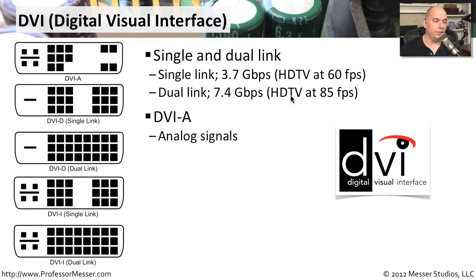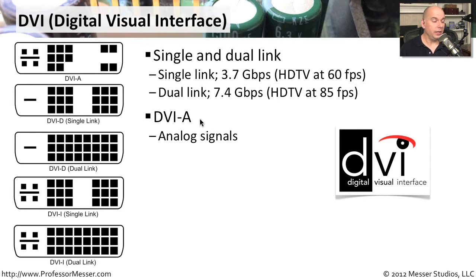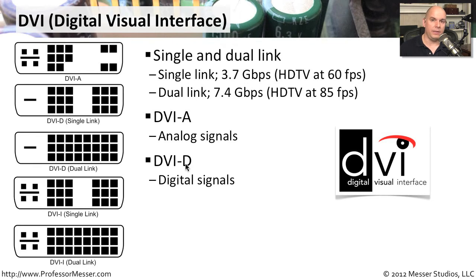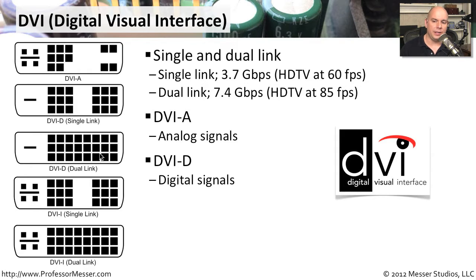If you're working with an analog signal over DVI, it's going to look like the connection at the top, which is a DVI-A — that A stands for analog. Conversely, there are digital signals on a DVI-D, that D being for the digital connection, and there are both single link and dual link connections for the DVI-D.